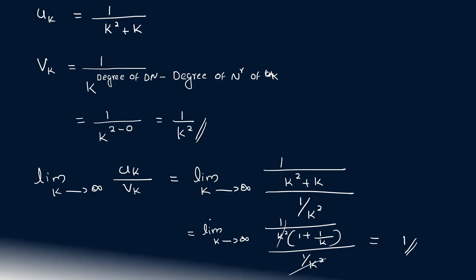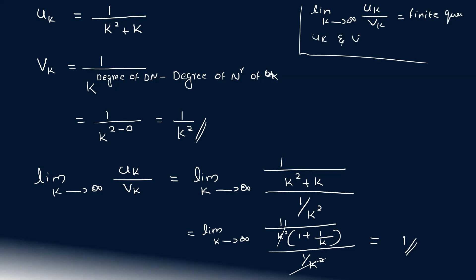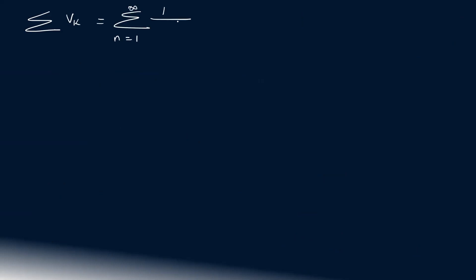By the limit comparison test: if limit k tends to infinity of uk by vk is equal to a finite nonzero quantity, then uk and vk converge or diverge together. Here the limit equals 1, which is finite. So we compare with summation from n equal to 1 to infinity of 1 by k squared.